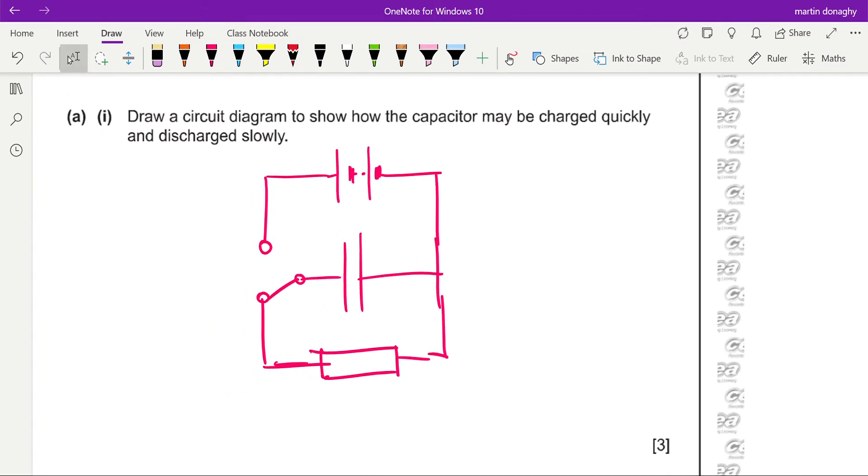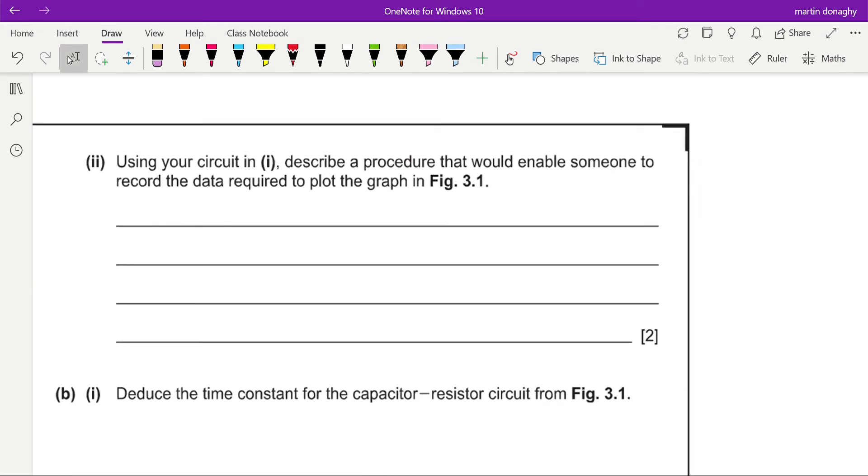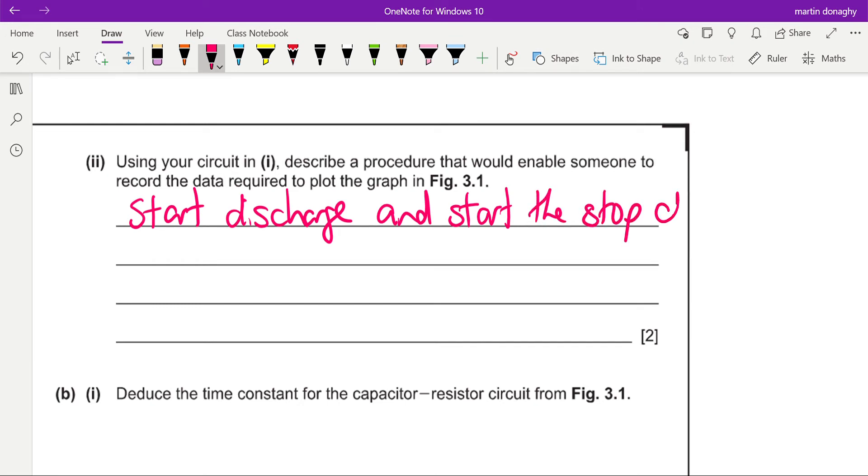Okay, you do need to be able to draw diagrams like that. It then tells us, well, let's draw certain - I'm sure how the capacitor can maybe charge quickly, discharge quickly - but it told us we measured the voltage across the capacitor, so you should have a voltmeter in parallel across the capacitor. Using your circuit, describe a procedure that would enable someone to record the data required. So start to discharge by throwing the switch to the lower position and start the stopwatch at the same time.